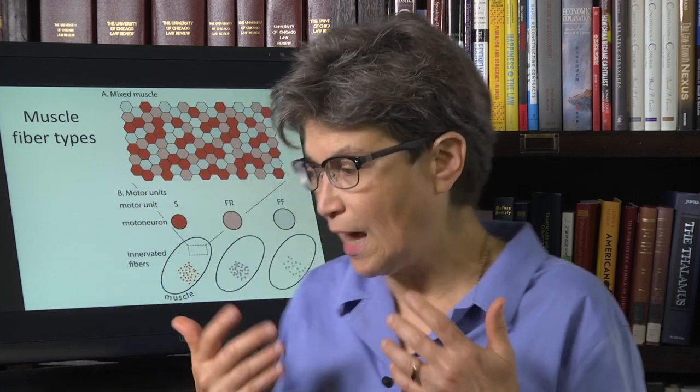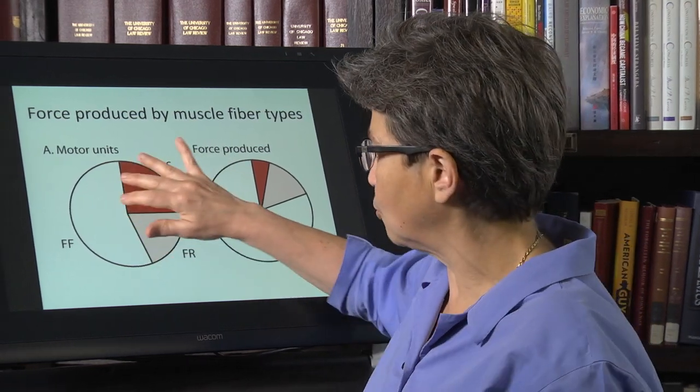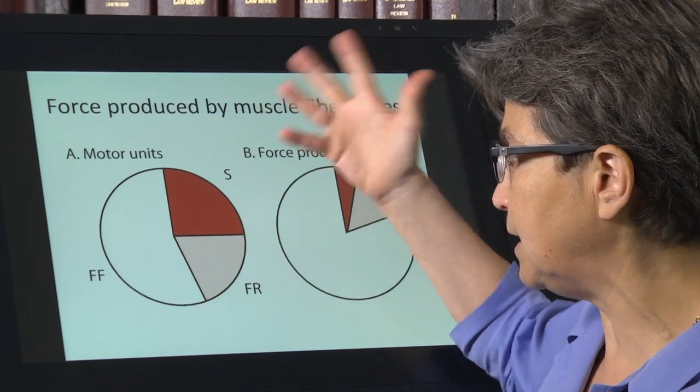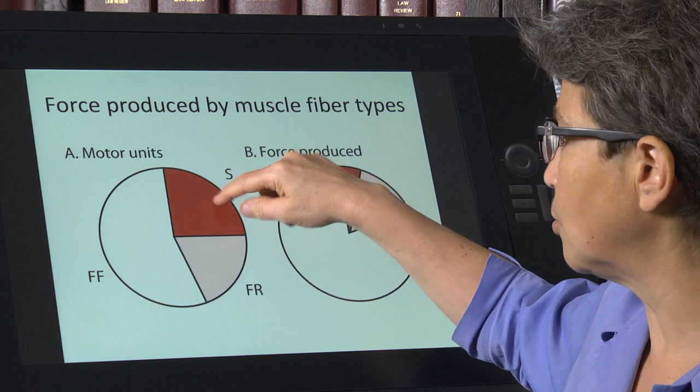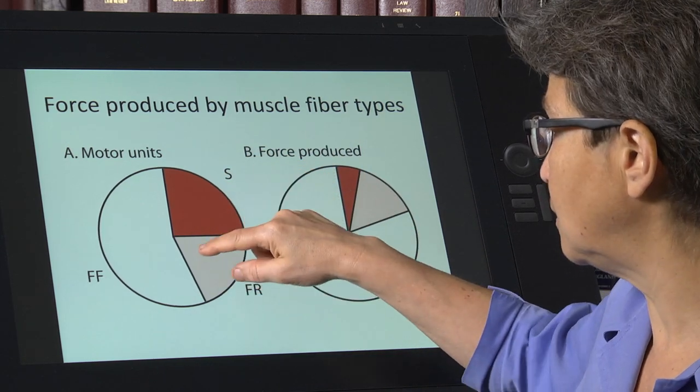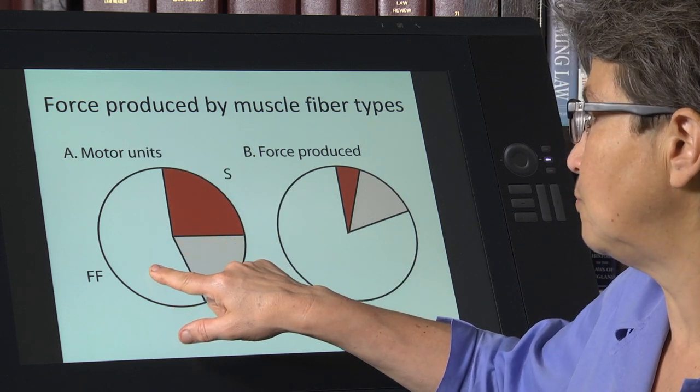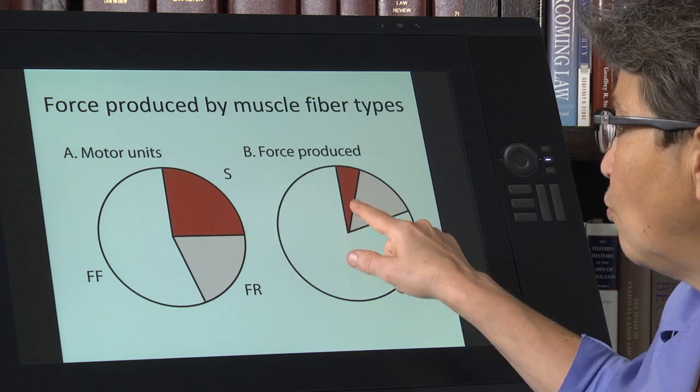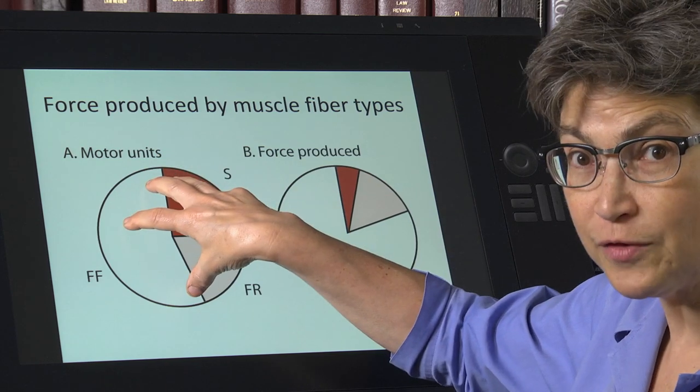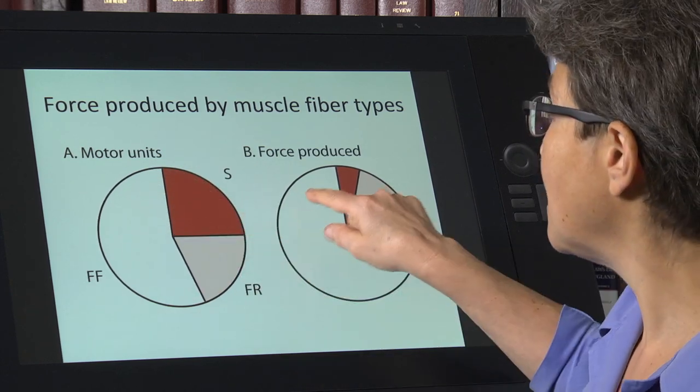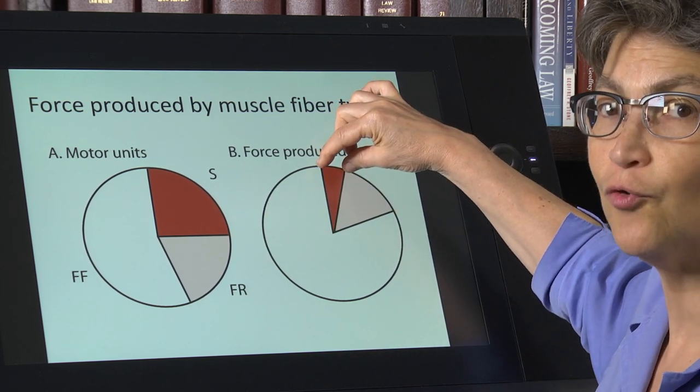So let's consider that we have a mixed muscle. And this is the proportion of different motor units that supply that muscle. So a quarter of them are slow motor units, less than a quarter are fast fatigue resistant, and a little more than half are fast fatigable. And what you see is that the slow motor units produce much. If you look at the total force produced by all of these motor units activated, all of these slow motor units are going to only produce a little bit of force.